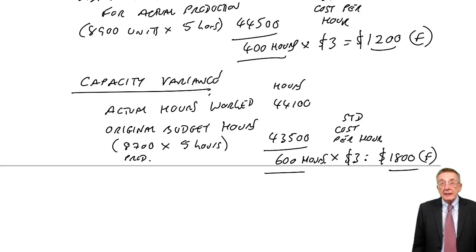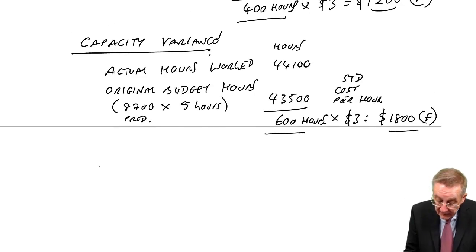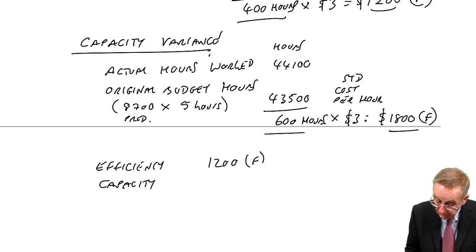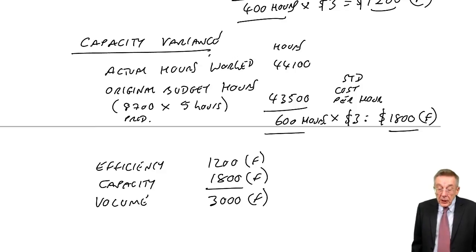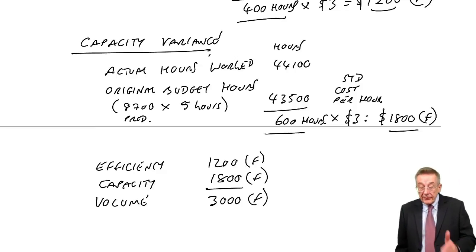So it is messy, I'm afraid. It's very much learning the rules. But just so there's no confusion, if I summarize. Efficiency is $1,200 favourable. Capacity is $1,800 favourable. So the two together is the volume variance. We'd worked that out earlier. The exam made essentially the volume variance. Fine, it's 3,000 favourable. But you could be asked for either or both of efficiency and capacity.